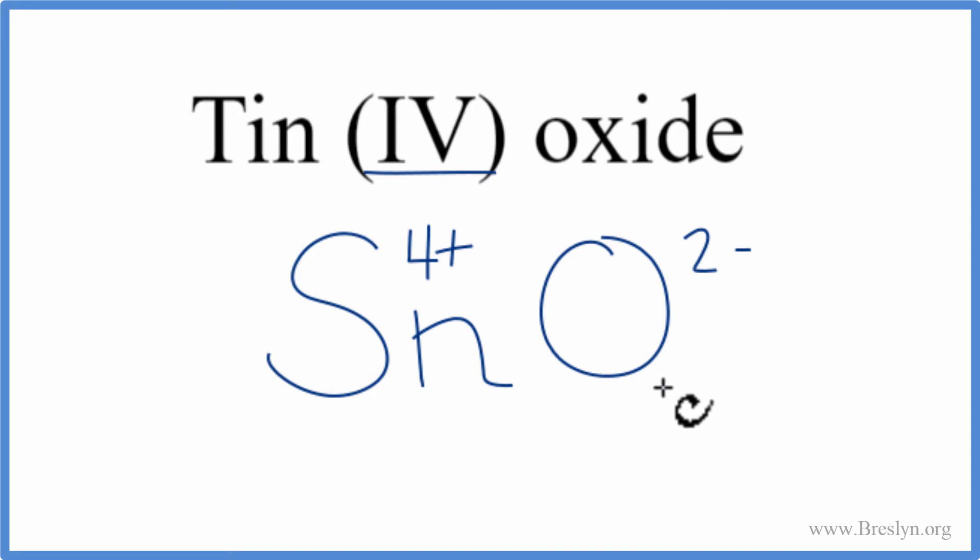So we could put a subscript right here, and now let's check our charges. Two oxygen atoms, each one's two minus, so two times two minus, that's four minus. And then we have the one, four plus for the tin. So those balance out to zero, net charge is zero.